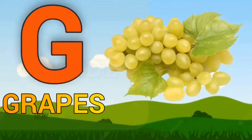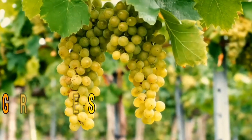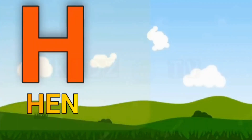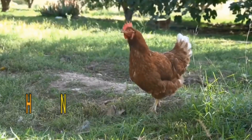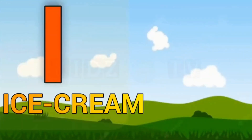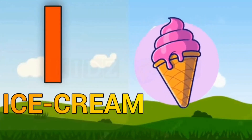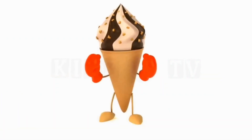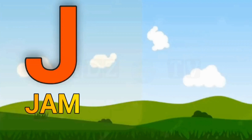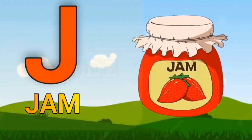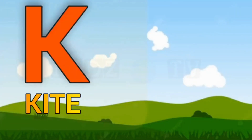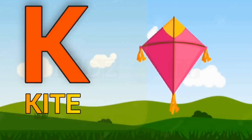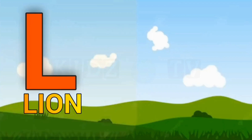G for Grapes. H for Hen. I for Ice Cream. J for Jump. K for Kite. L for Lion.